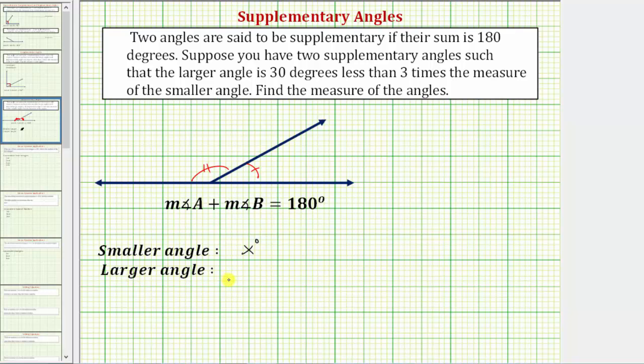And therefore the expression for the larger angle would be 30 less than three times x. Well three times x would be three x, but we want 30 less than three x. And therefore the expression for the larger angle would be three x minus 30 and the units are degrees.